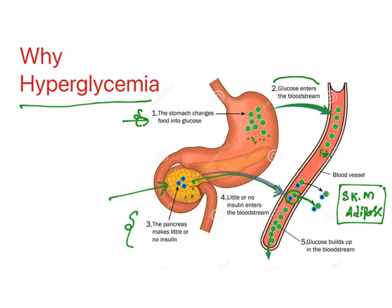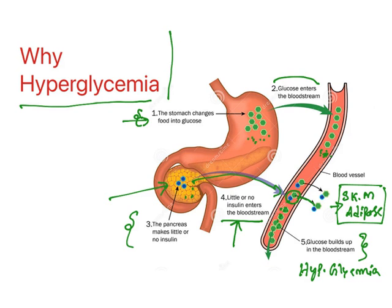That is how insulin takes the glucose from blood to skeletal muscle and adipose tissue. Now what happens in diabetes mellitus? There is little or no insulin present in the bloodstream — there is a problem in insulin release. If insulin is not there, all the glucose accumulates inside the blood, and that condition is what we call hyperglycemia. That is the reason why people get the hyperglycemia condition.